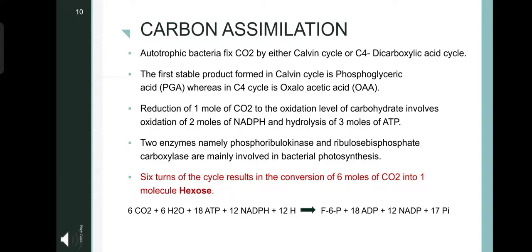The last step in mechanism of photosynthesis is the carbon assimilation or carbon fixation. The autotrophic bacteria fix carbon dioxide either by the Calvin cycle or the C4 dicarboxylic acid cycle. The first stable compound formed in the Calvin cycle is phosphoglyceric acid, whereas in C4 cycle is oxaloacetic acid. The reduction of 1 mole of carbon dioxide to the oxidation level of carbohydrate involves oxidation of 2 moles of NADPH and hydrolysis of 3 moles of ATP. The two enzymes are mainly used, namely phosphoribulokinase and ribulose bisphosphate carboxylase, to produce one molecule of hexose. 6 turns of cycle is required which involves 6 moles of carbon dioxide.